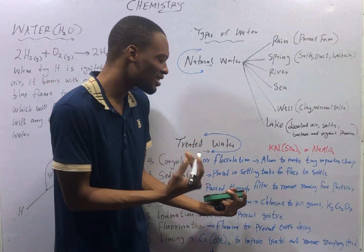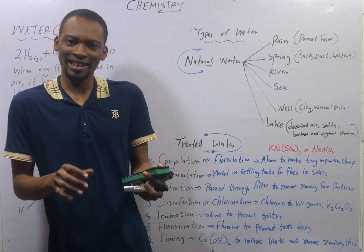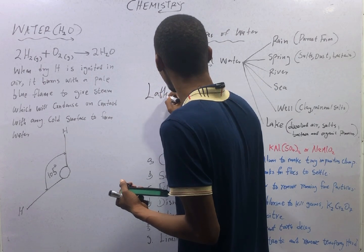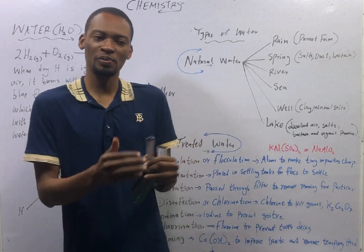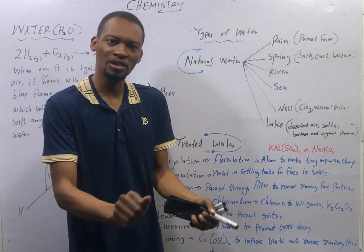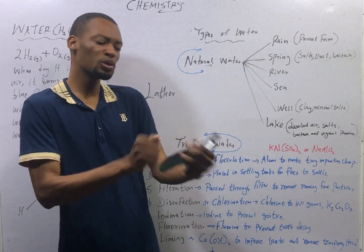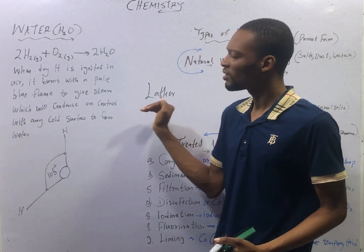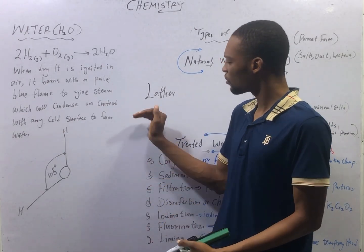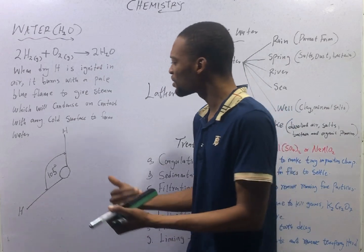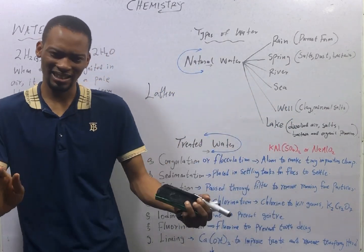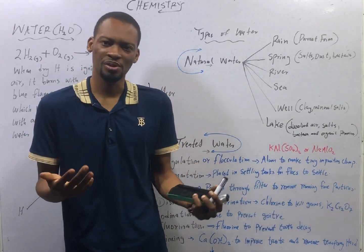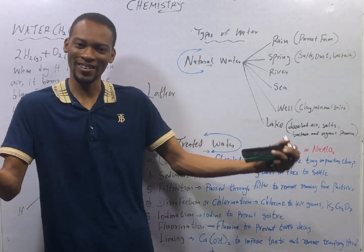That takes us to hardness in water. There is some water that, as you use it to wash, does not lather. Lather is what you expect when you put soap in water and wash clothes — it should form a lot of foam. But in some cases this water does not form lather. So we say it is hard water. Hardness in water can be temporary or permanent.